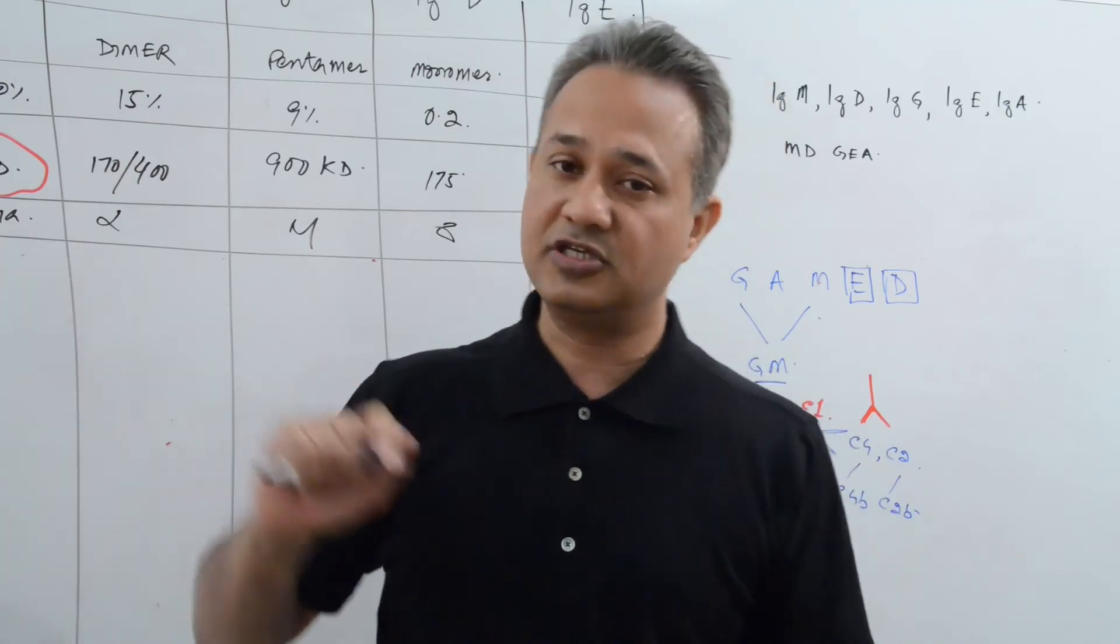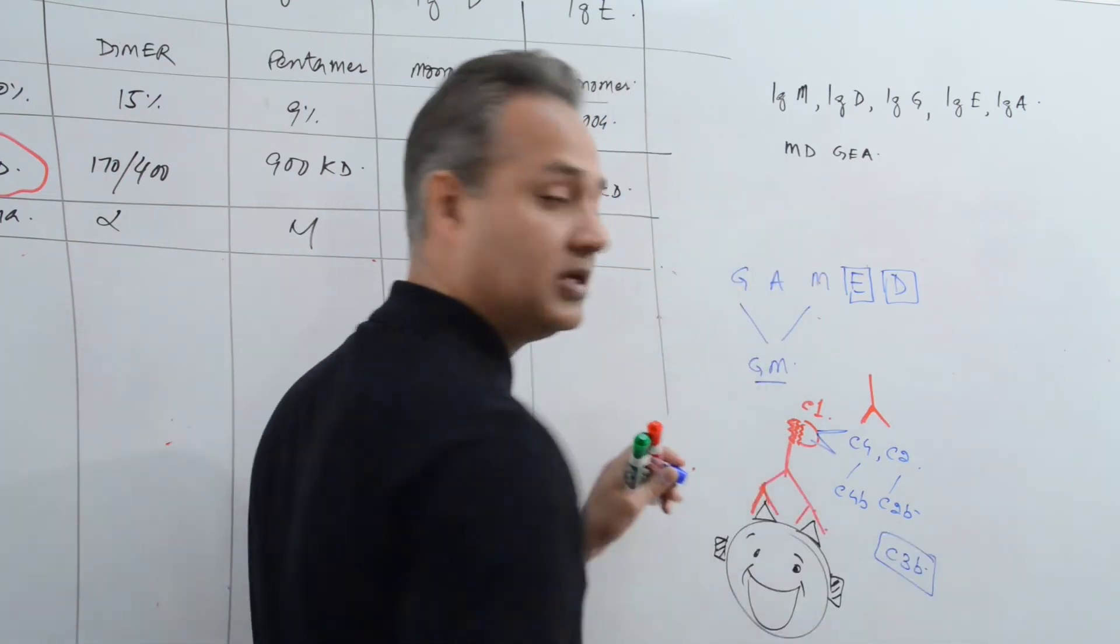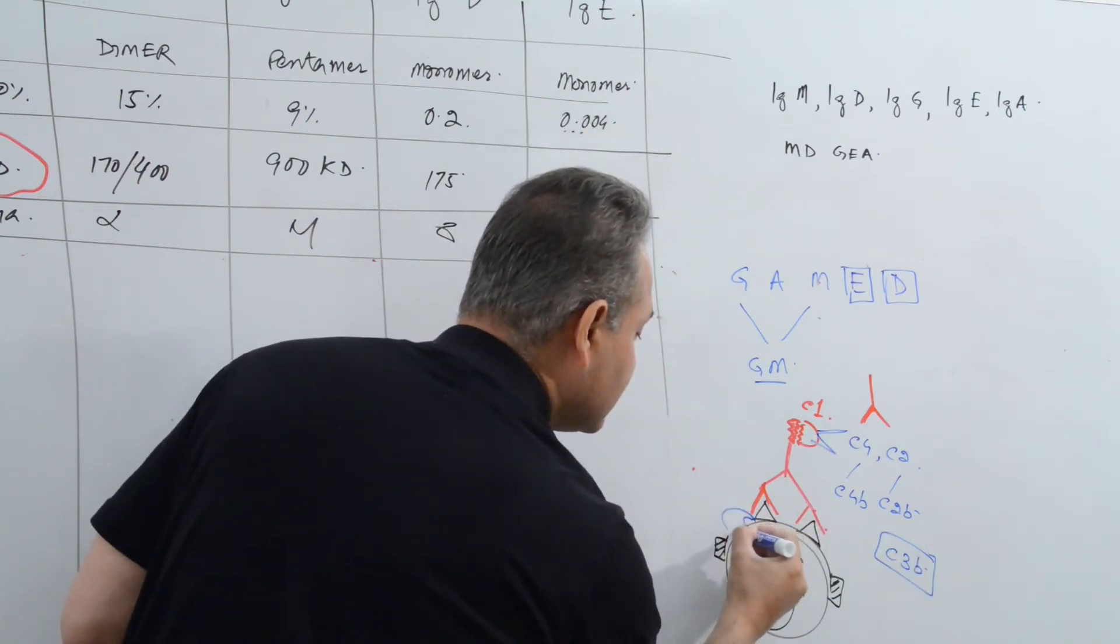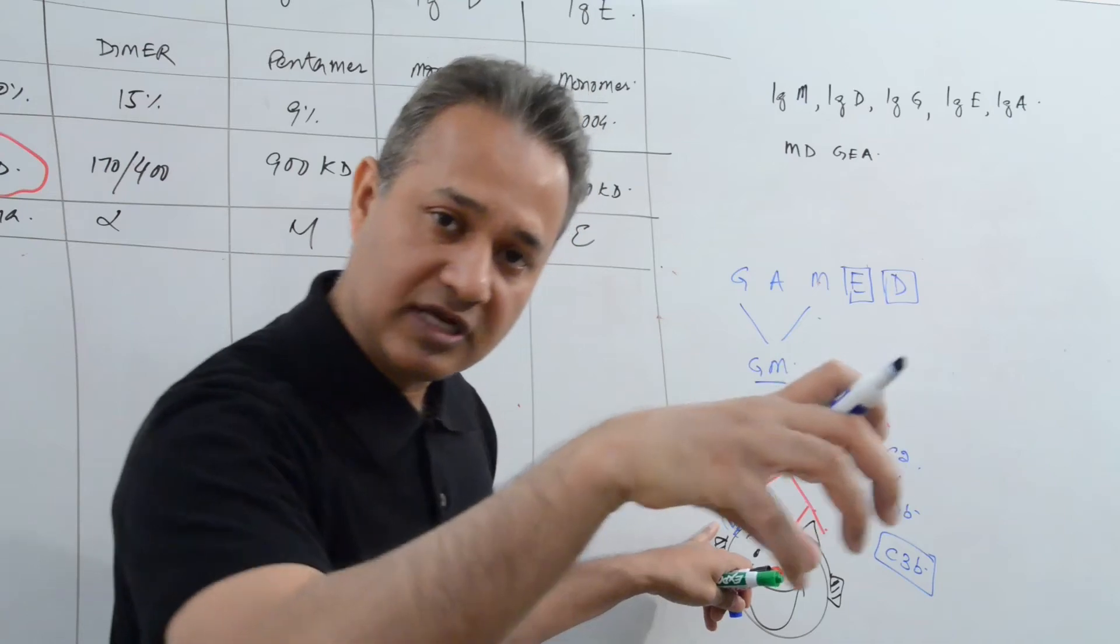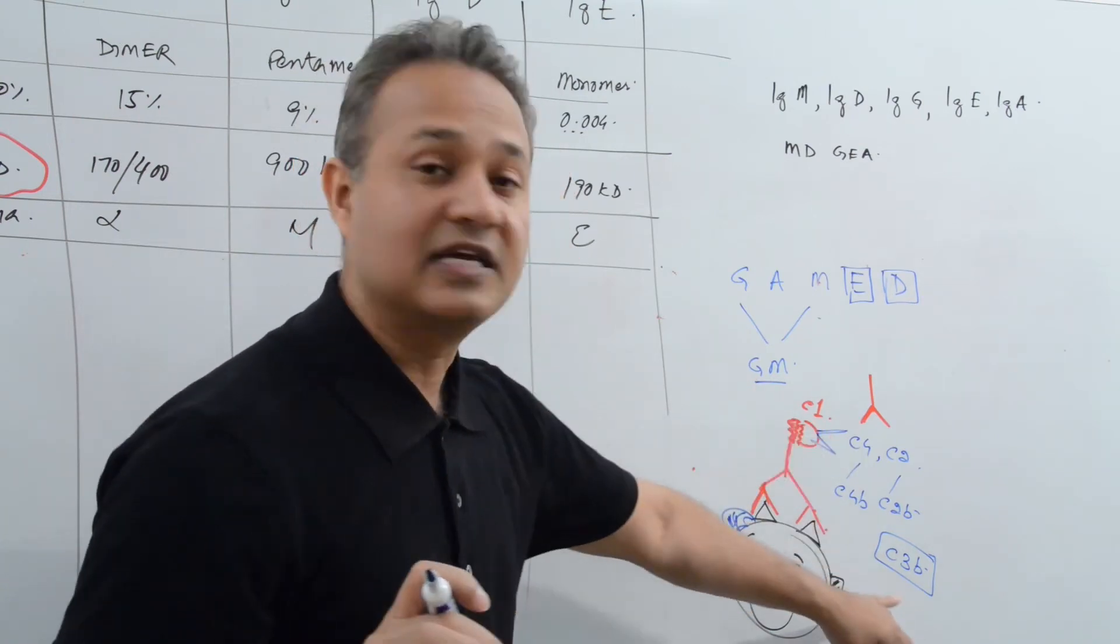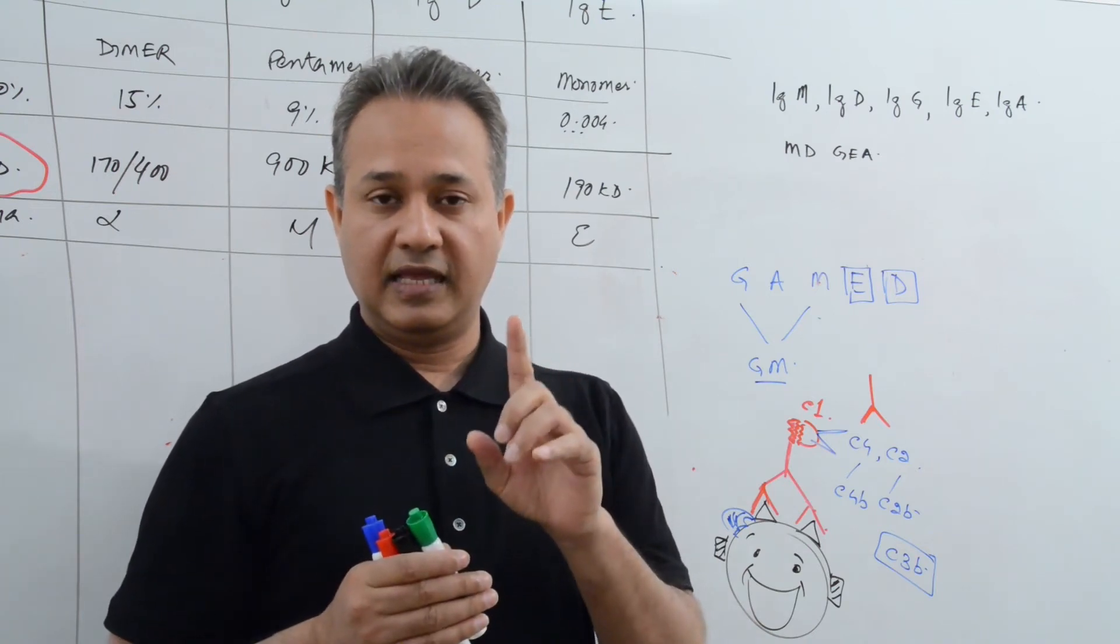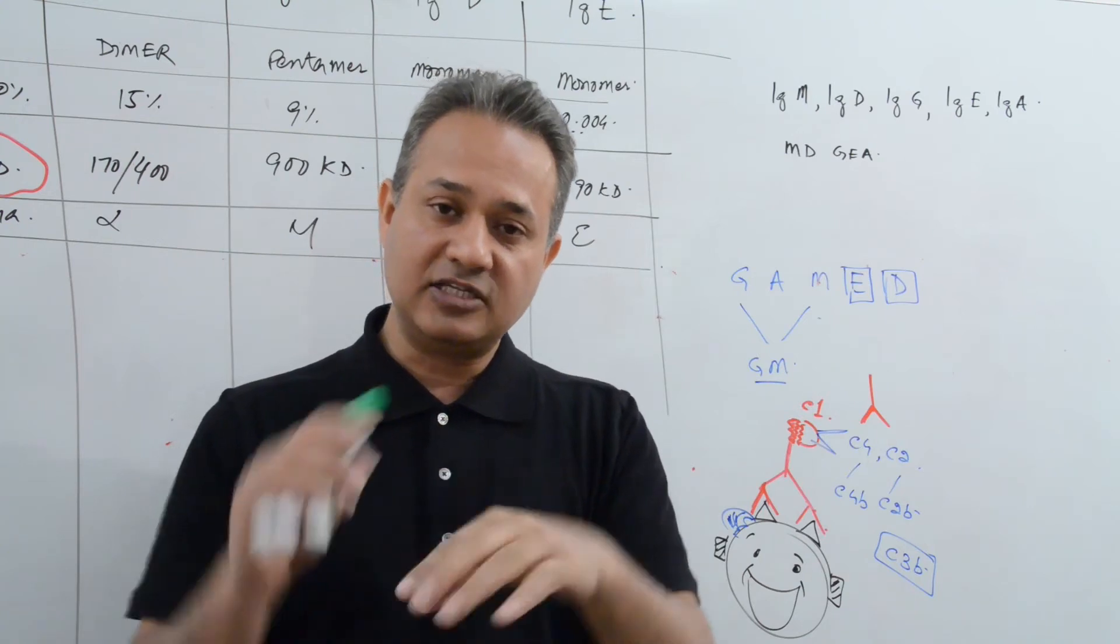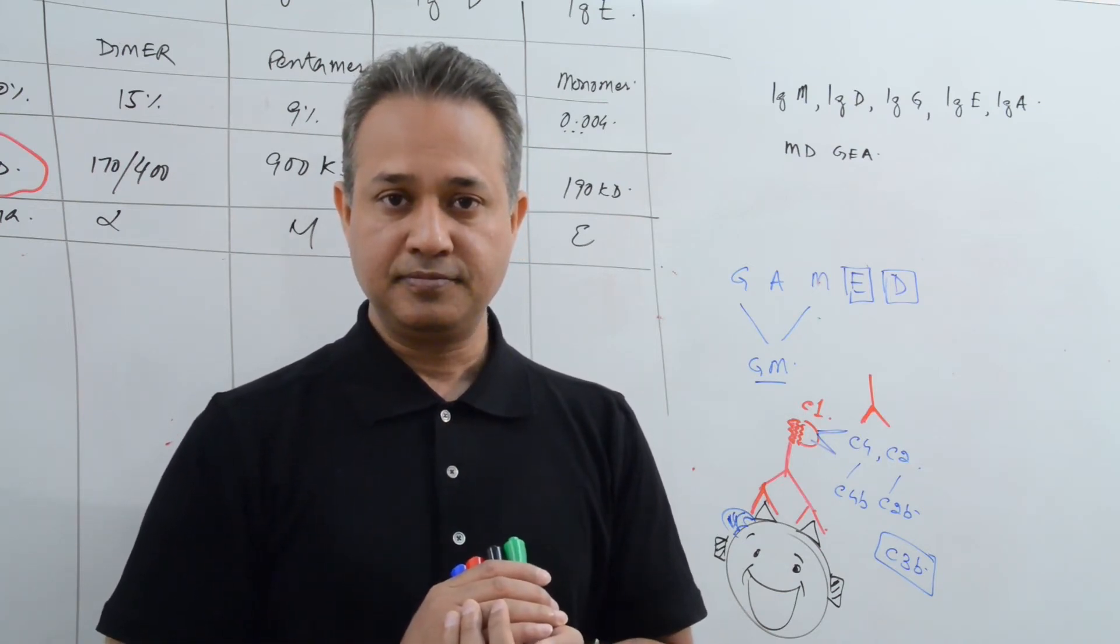Why did I talk about this in opsonization? This complement activation leads to C3B formation. C3B, I talked about it two parts before, attaches on the surface of the pathogen. And macrophage has a sweet tooth for C3B. Macrophage can attach with C3B and opsonize, phagocytose the bacteria or virus. So C3B is an opsonin. Both G and M can create C3B by complement activation. This is called indirect opsonization. Antibody or immunoglobulin activating the complement, creating C3B. C3B then attaching to the surface of the pathogen, opsonizing it. This process is called indirect opsonization. Both G and M do it.